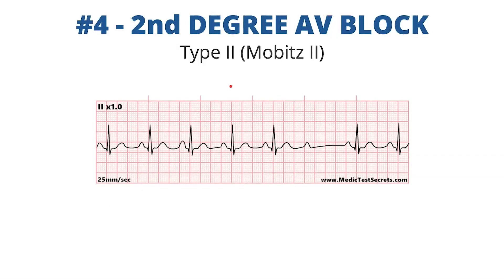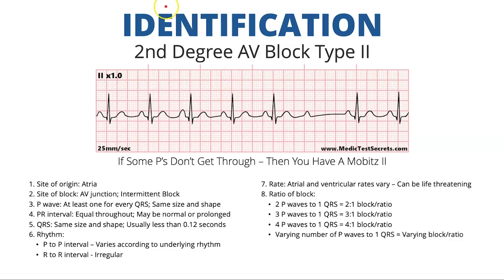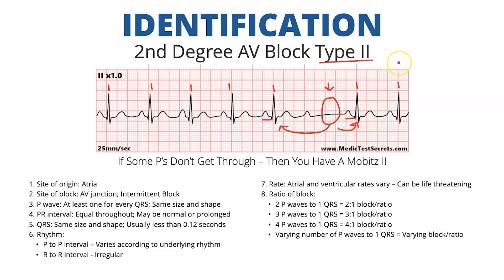Next we have second degree AV block type two, or Mobitz two. For this rhythm we again have an irregular R to R interval. I can see where the beat should land — and we have a dropped beat. I'm going to look at the QRS after and the QRS before, and look at the PR intervals. The PR intervals are the same — because the PR intervals are the same, I know that this is going to be a type two AV block.